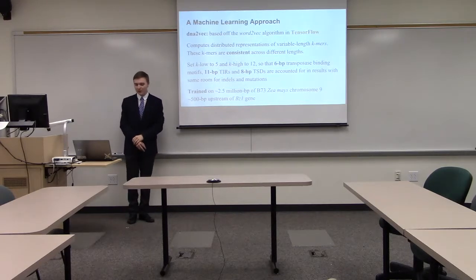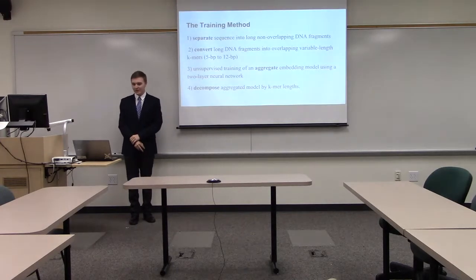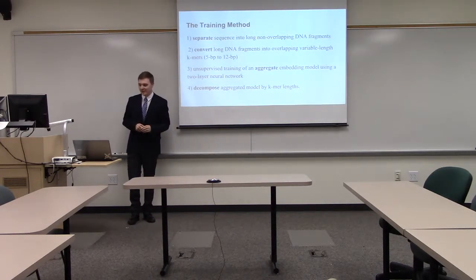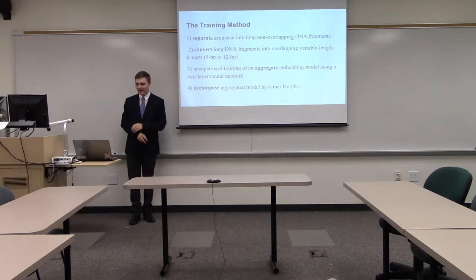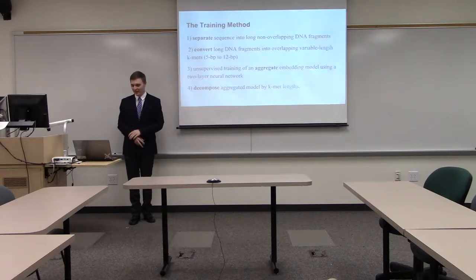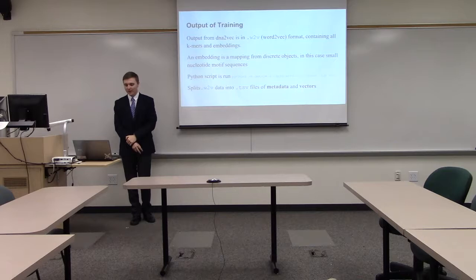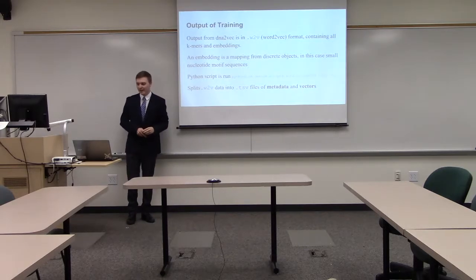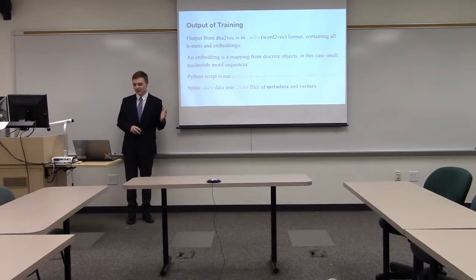I trained it on 2.5 million base pairs of maize — the assembly — and picked a region within an area of high transposable element activity on the bronze gene. The training method separates the sequence, converts it into K-mers set from 5 to 12, then trains the network on aggregate embeddings using a two-layer neural network, and decomposes the model by K-mer length. The output from DNA-to-vector is a word-to-vector format; I ran a Python script to turn it into two TSV files — one for the tensors and one for the actual K-mers themselves.